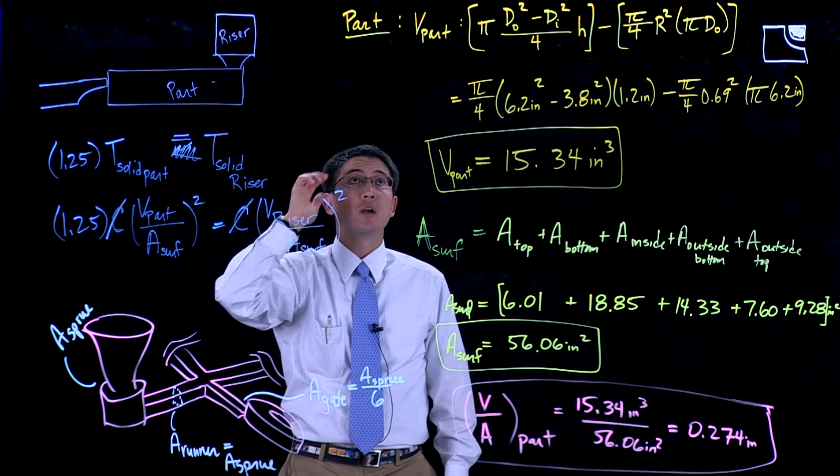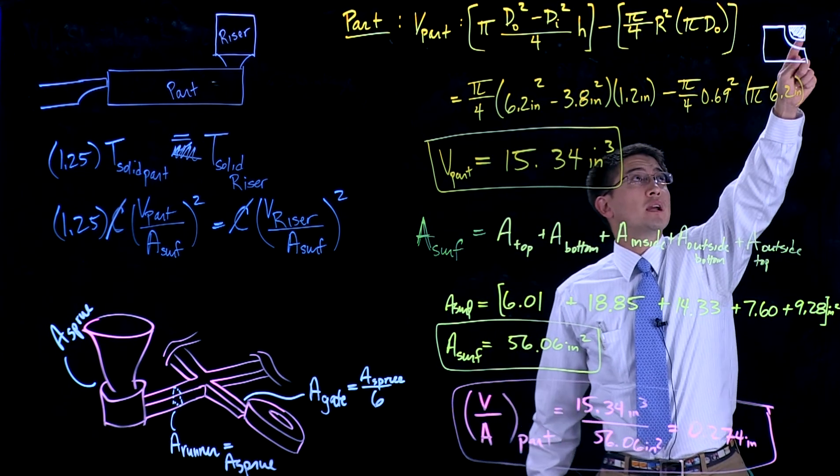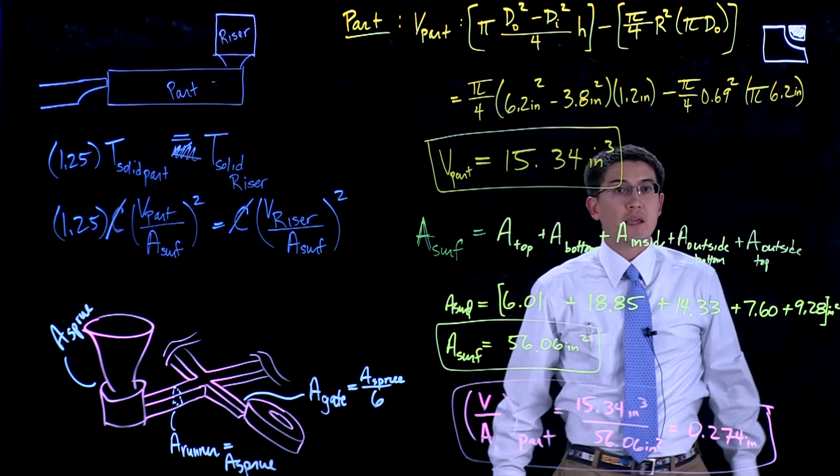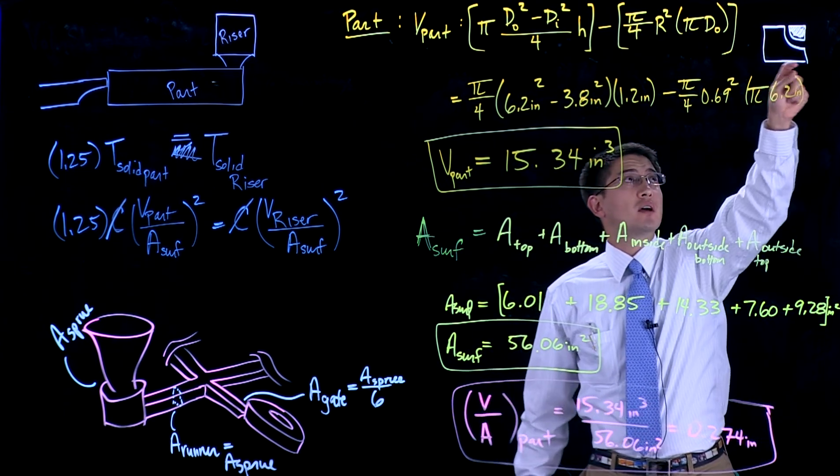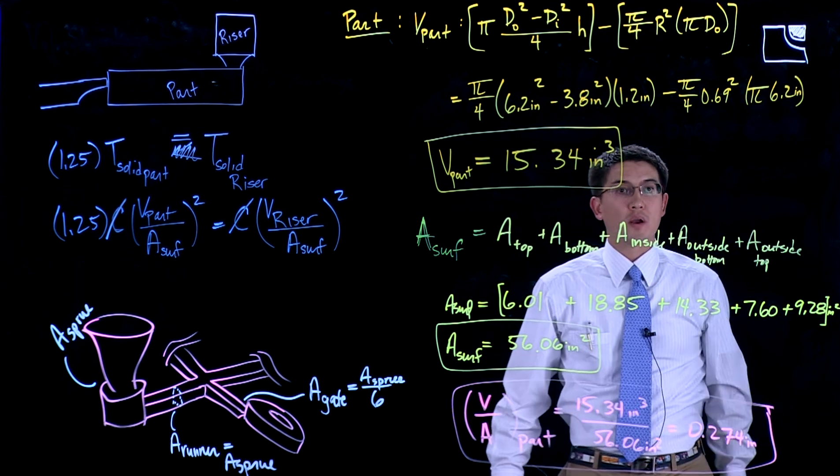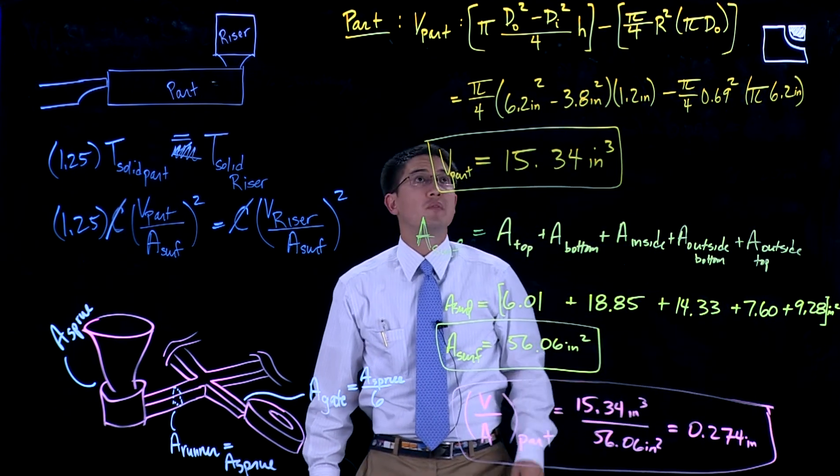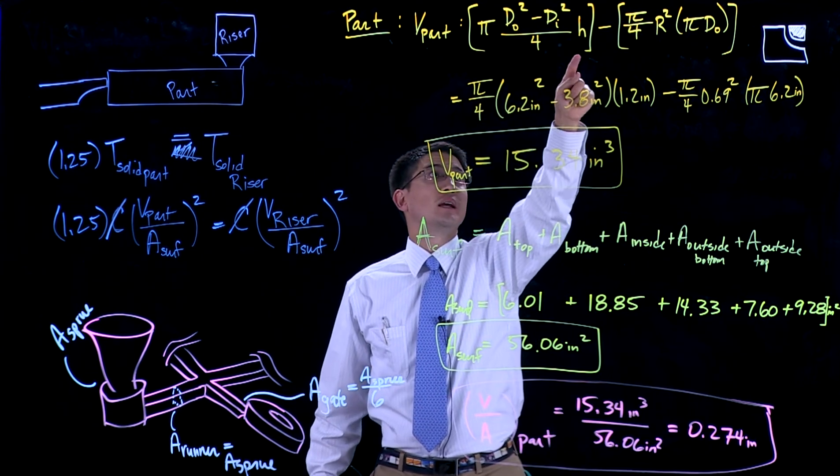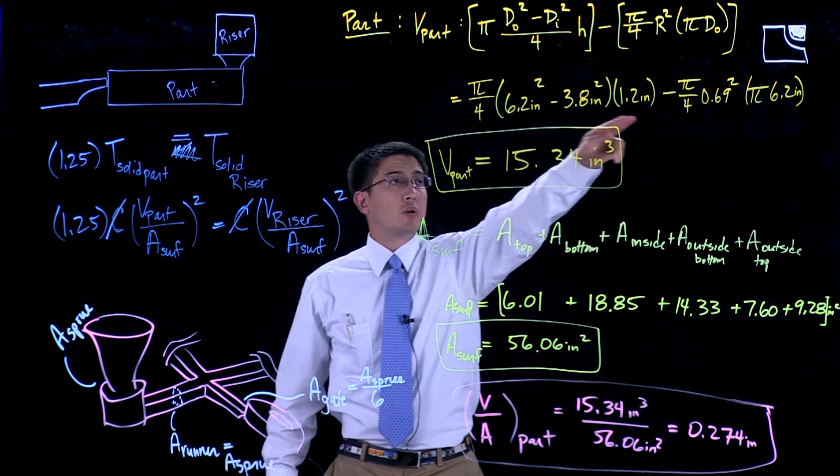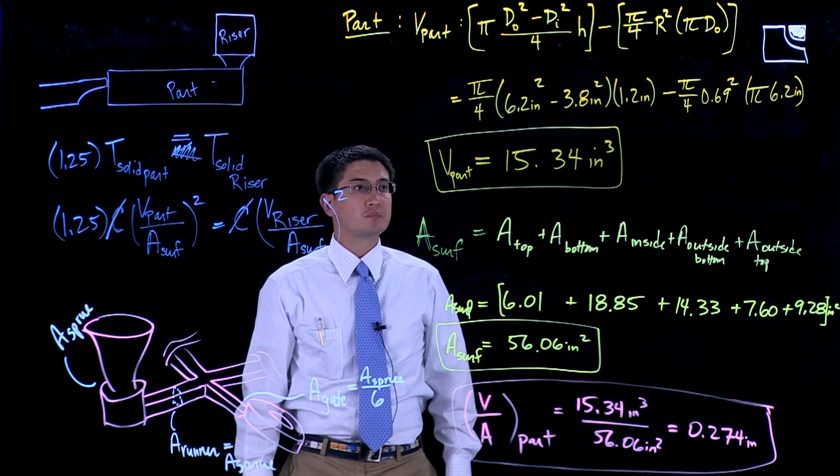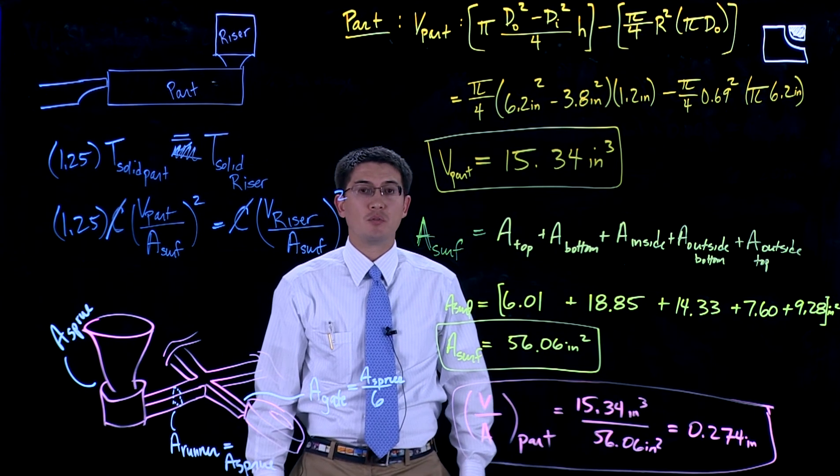Looking at solely just the part and calculating the volume of it, we can look at this as a ring with a quarter of a circular torus cut out of the corner. This is essentially what a cross-sectional area of our ring is going to be, so we're cutting out this little corner piece of it. So the volume of that is going to be this ring minus a quarter of that circular torus. When you plug in the values that we have for our dimensions, we come up with the volume of that part is 15.34 cubic inches.